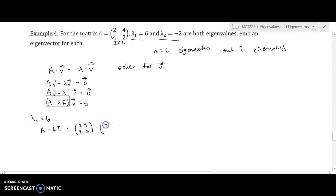So if I multiply it by 6, it'll be [[6, 0], [0, 6]]. And if I take the difference there, I will have [[-4, 4], [4, -4]]. So once again, one thing to notice here is these columns are linearly dependent.